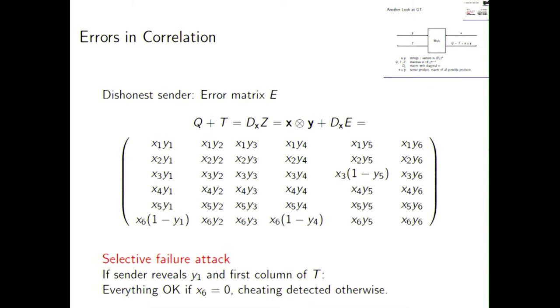So, on top of the tensor product, or in addition to the tensor product, we get some error. And remember, we have D_X Z. So, if the sender tampers with something, we can rewrite this as X tensor product Y plus D_X E for some error matrix. And then you can see we get some deviating entries over there. And this gives rise to what is called a selective failure attack.